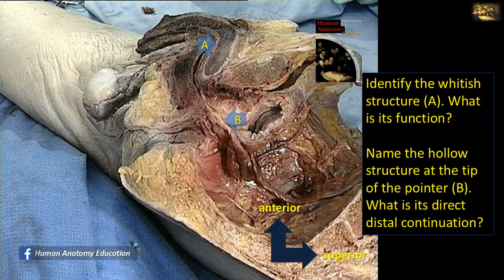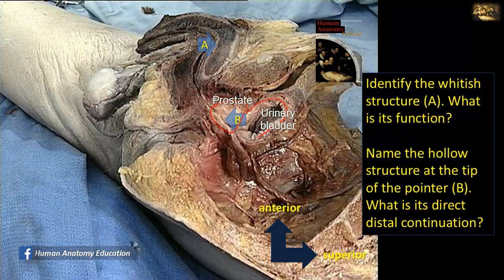Identify the whitish structure A, what is its function, and name the hollow structure at the tip of the pointer. Structure A is a thick fibrous tissue — the tunica albuginea — that covers the crus and corpus cavernosum. These corpora and the crus contain erectile tissue filled with blood during erection. Being surrounded by thick fibrous tissue helps keep them hard and maintain erection. The hollow structure at the tip of the pointer is the prostatic urethra, which traverses the prostate from base to apex, then continues as the membranous and then the penile urethra.